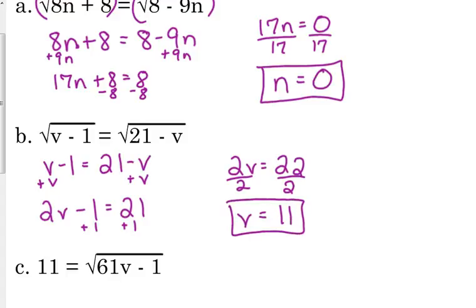Do a quick check. 11 minus 1 is 10, square root of 10 on the left side. 21 minus 11 is 10, square root of 10 on the right side. There we go.